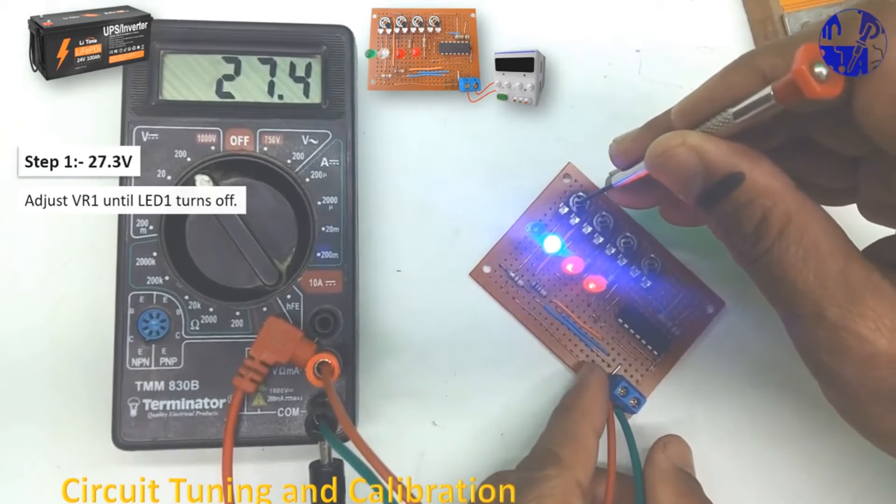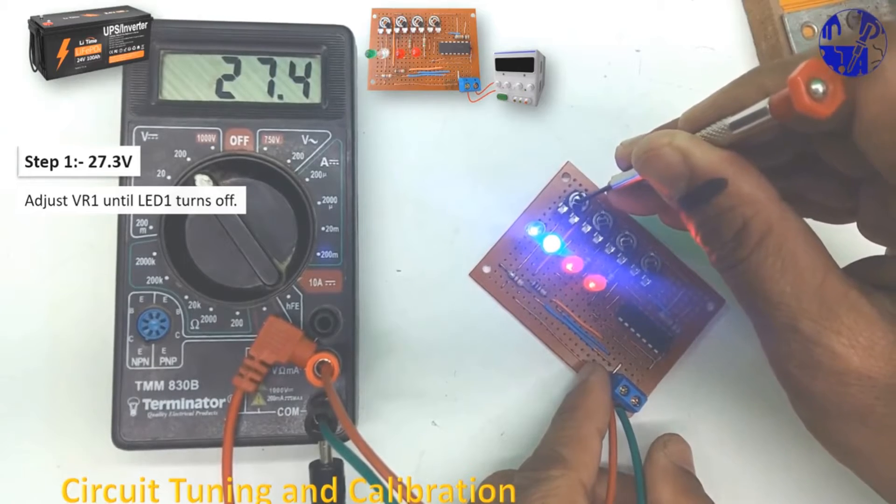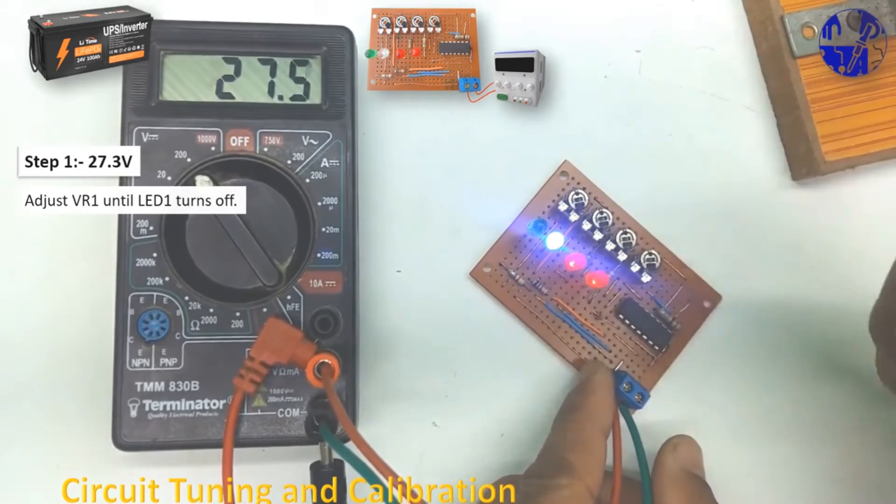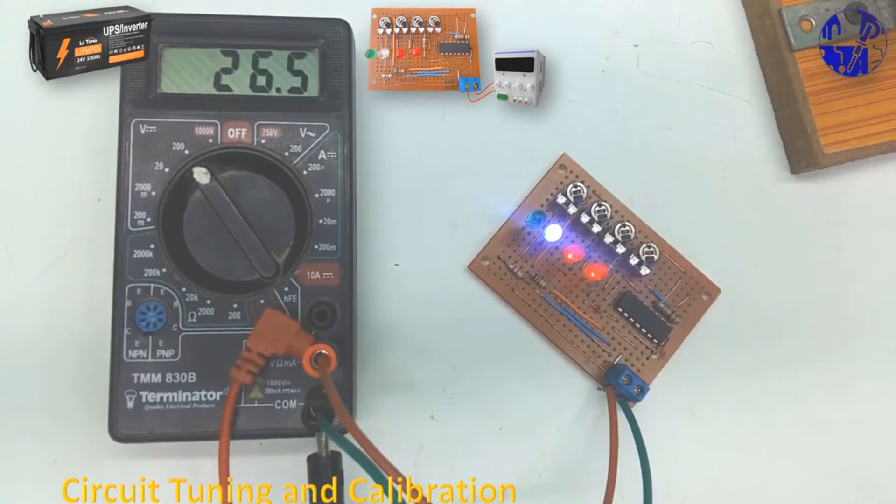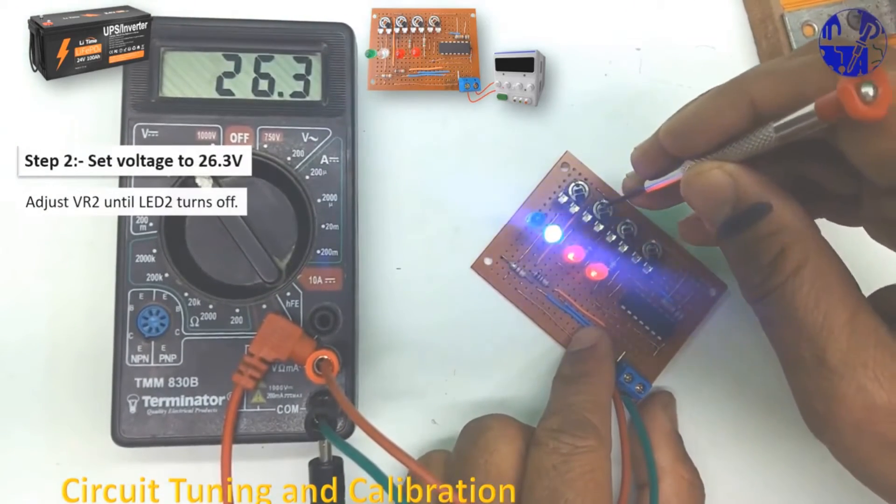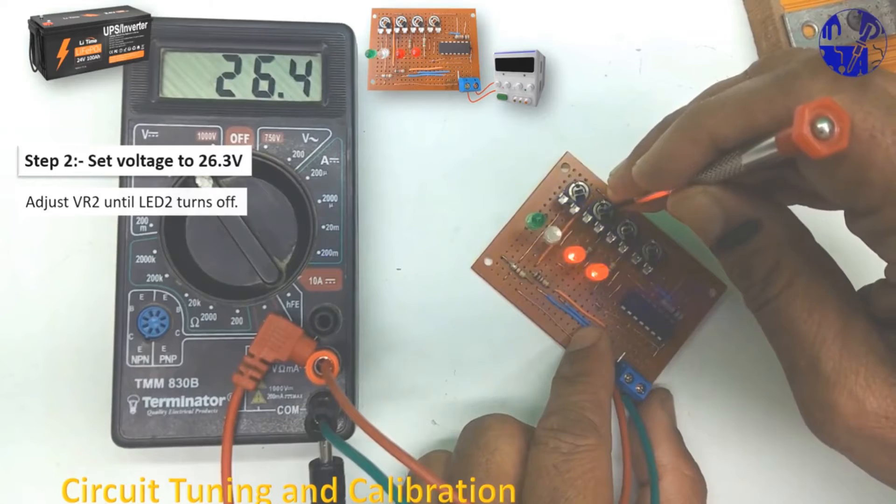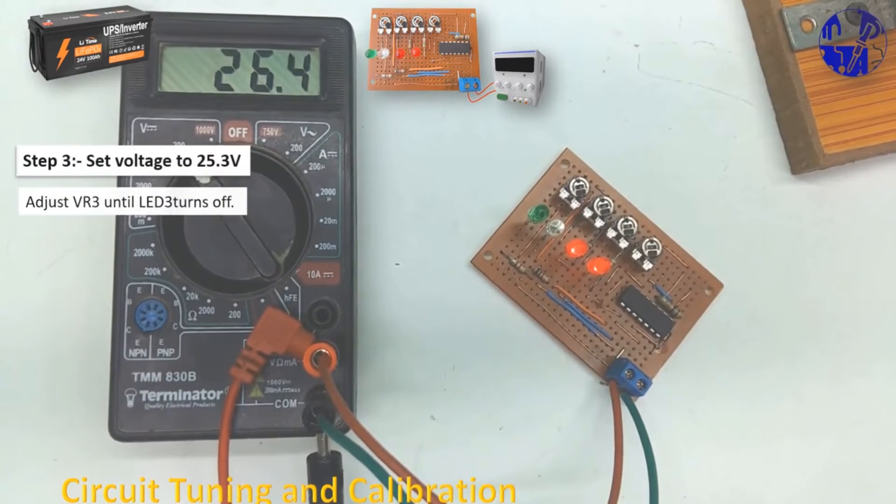When the battery voltage falls below 27V, LED1 will turn off, signaling a voltage drop below 27V. At step 3, when the voltage falls below 25.3V, LED3 will turn off.